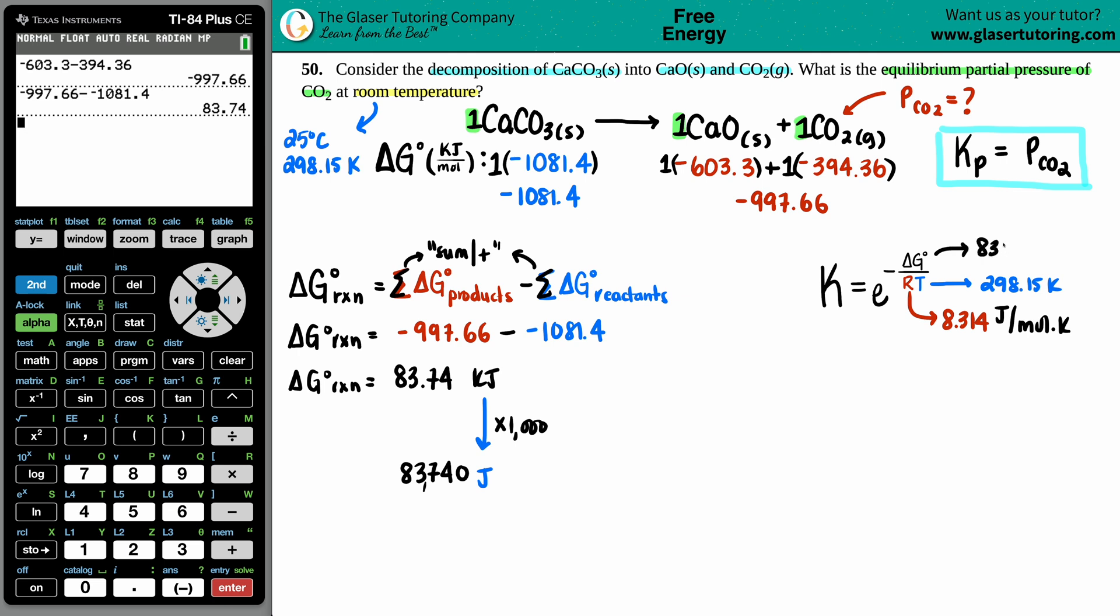And now let's plug everything in. K equals e all raised to the negative fraction. The negative is in the formula so I have to keep that there. Let's just bring this down a little bit, so 83,740, and then I'm just going to divide it by my two values. I have 8.314, and then I have room temperature which is always 298.15.